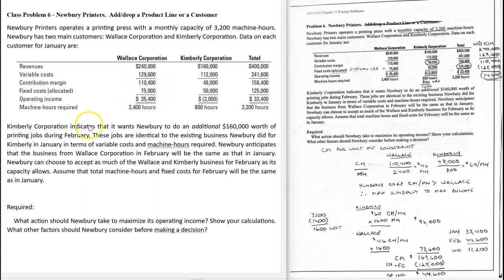Kimberly indicates that it wants Newberry to do an additional $160,000 worth of printing jobs during February — this is just for one month. So another $160,000; they're going to double it. They're making $160,000 now and want to do twice as much next month. These jobs are identical to the existing business Newberry did for Kimberly in terms of variable costs and machine hours required.